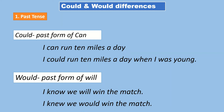Now let's discuss the differences between 'could' and 'would.' There are three main differences. The first is past tense: 'could' is the past form of 'can,' and 'would' is the past form of 'will.'